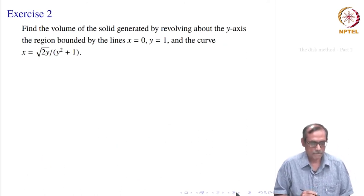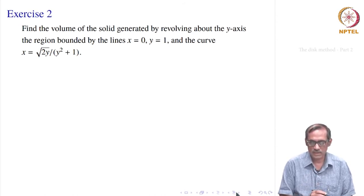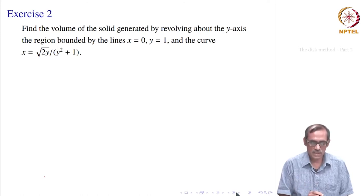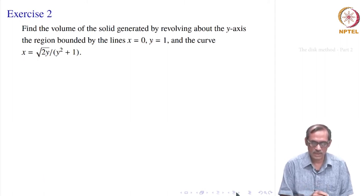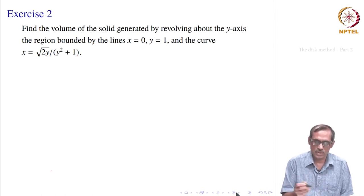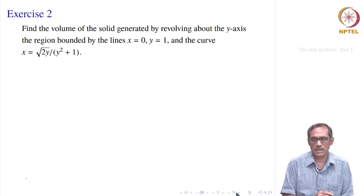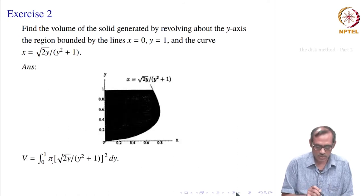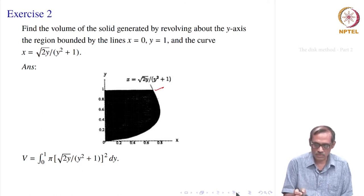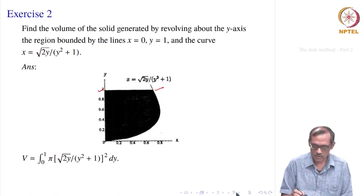Let us take the next problem. Find the volume of the solid generated by revolving about the y-axis the region bounded by the lines x = 0, y = 1, and the curve x equal to the square root of 2y divided by (y² + 1). The limits of y are not given explicitly. Here x = 0 is the y-axis. Since we revolve around the y-axis, we have y = 1 as the upper limit and need to find the lower limit.